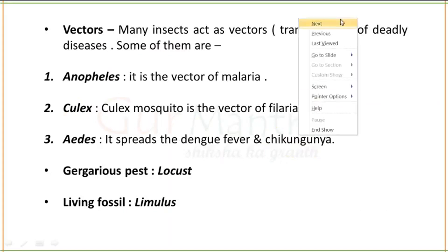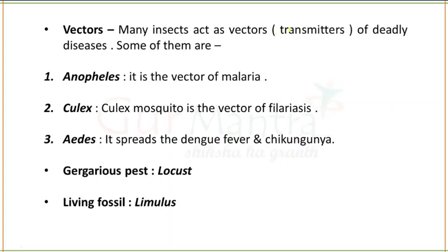Vectors are organisms that transmit deadly diseases. Many insects behave as vectors. Female Anopheles is the vector for malaria. Culex is the vector for filariasis, also called elephantiasis. Aedes is the vector for dengue fever and chikungunya. The gregarious pest is known as locust. The living fossil is Limulus.